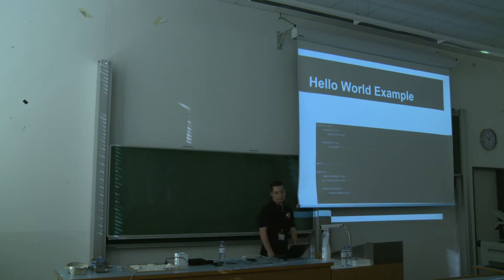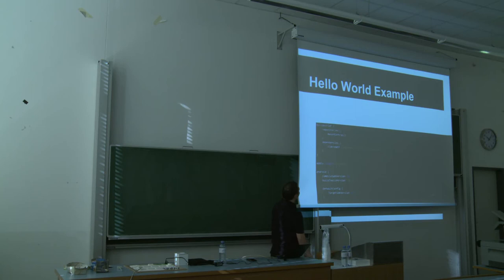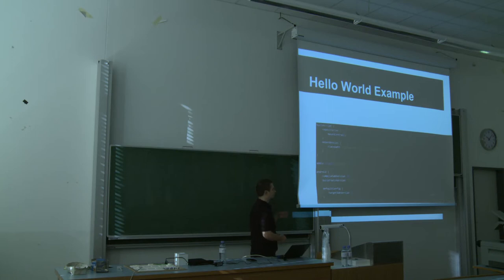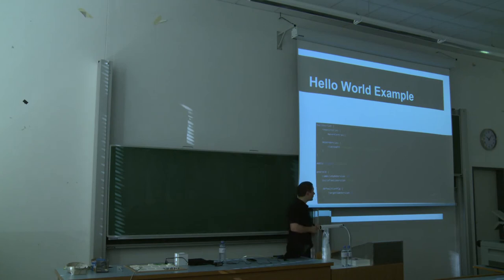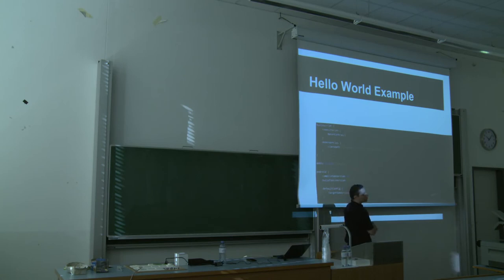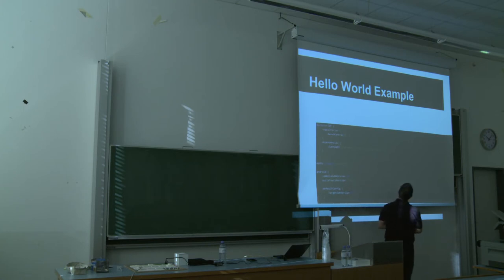Now let's look at the samples. This is a Hello World example for an app that simply launches an activity and prints Hello World. The first block is a build script block where you define what your build scripts will be configured with when launched. That will always be the same — you won't have to change it. It includes the Maven Central repository, where Google has put the artifact for the Gradle system for Android.